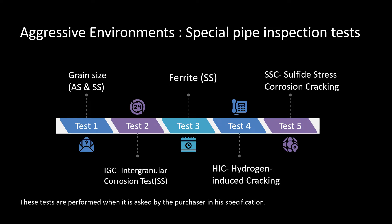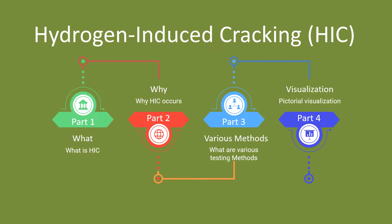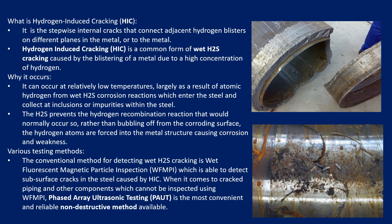In this section we are discussing special pipe inspection tests which are generally used in aggressive environments. In this part we are going to discuss hydrogen induced cracking. We will cover what HIC is, why this type of cracking occurs, what are the various methods to test it, and we'll look at a few pictures so that we can visualize what is happening when hydrogen induced cracking occurs.